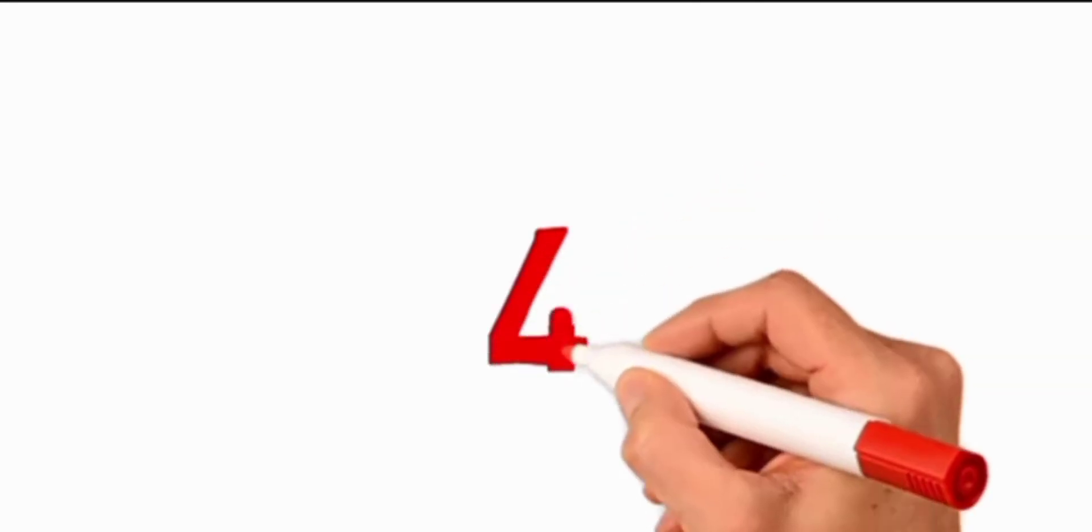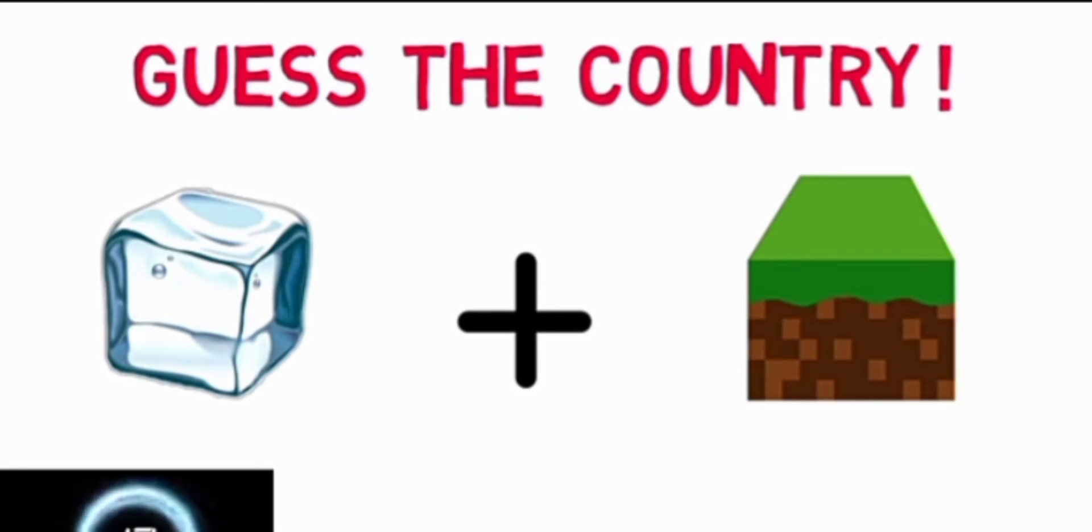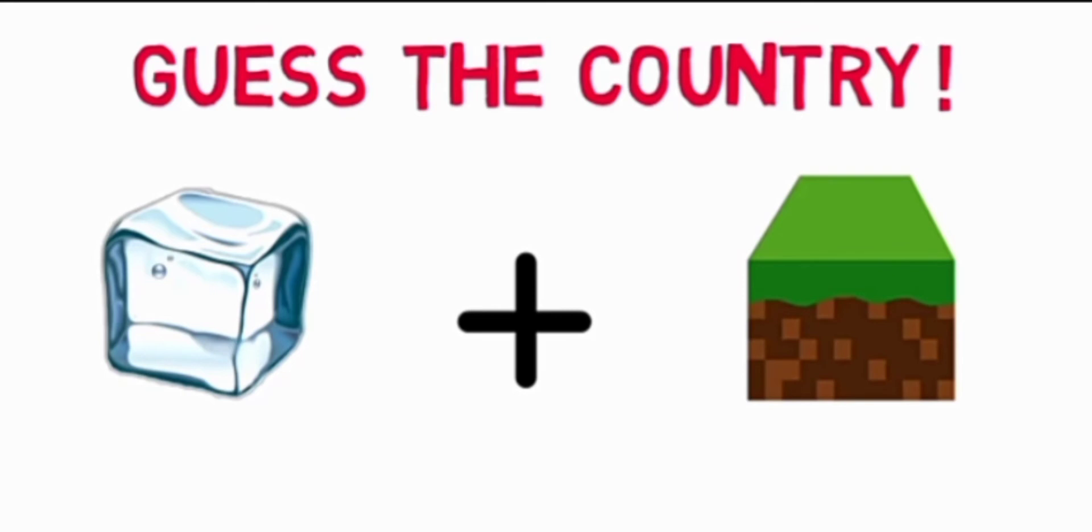Number four: ice plus land. You can see here this soil is green land, so this is very easy to guess. What is ice plus land? This is ice and this is land, so what is the country? This is Iceland.